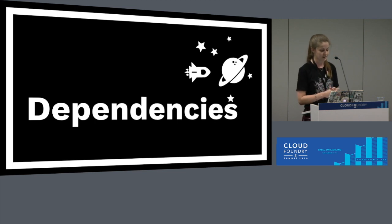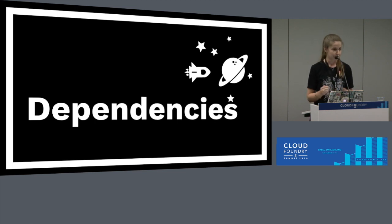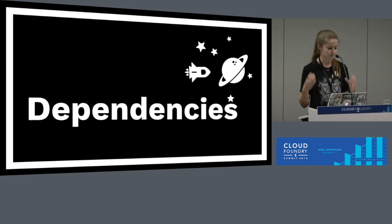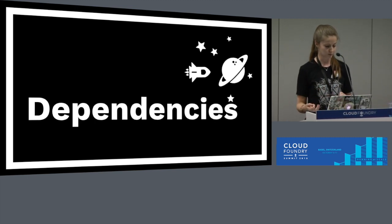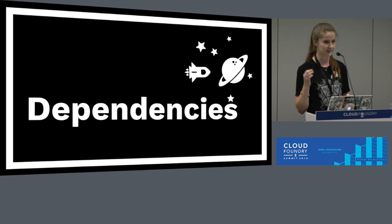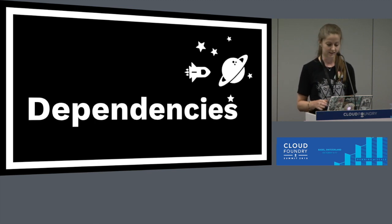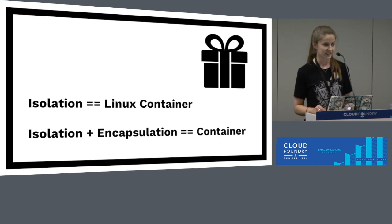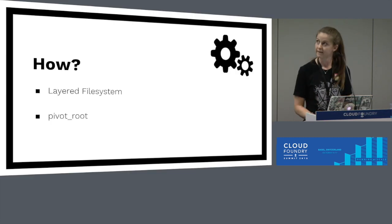The last thing which makes a container the thing we all love — different from a standard Linux container — is the encapsulation of dependencies. A few years ago, Docker figured out a way to encapsulate dependencies into shippable units within things called images, and they figured out how to do this efficiently. These images could be moved around between machines, meaning we could run many containers based on identical blueprints, sharing dependencies underneath. Isolation by itself gives you a Linux container, but isolation along with the encapsulation of dependencies gives you a container.